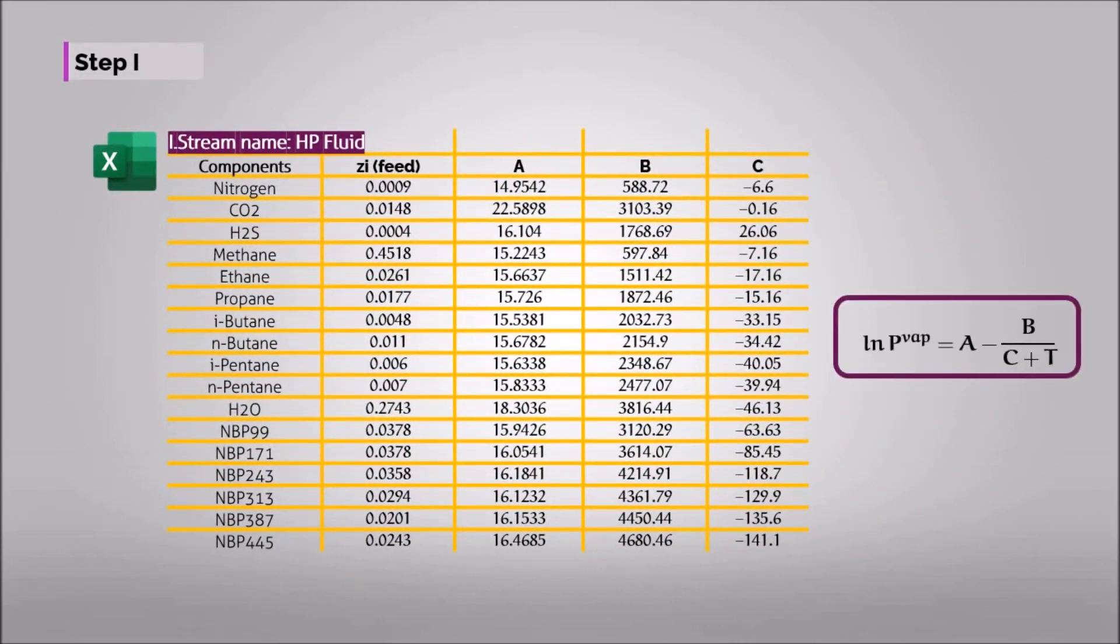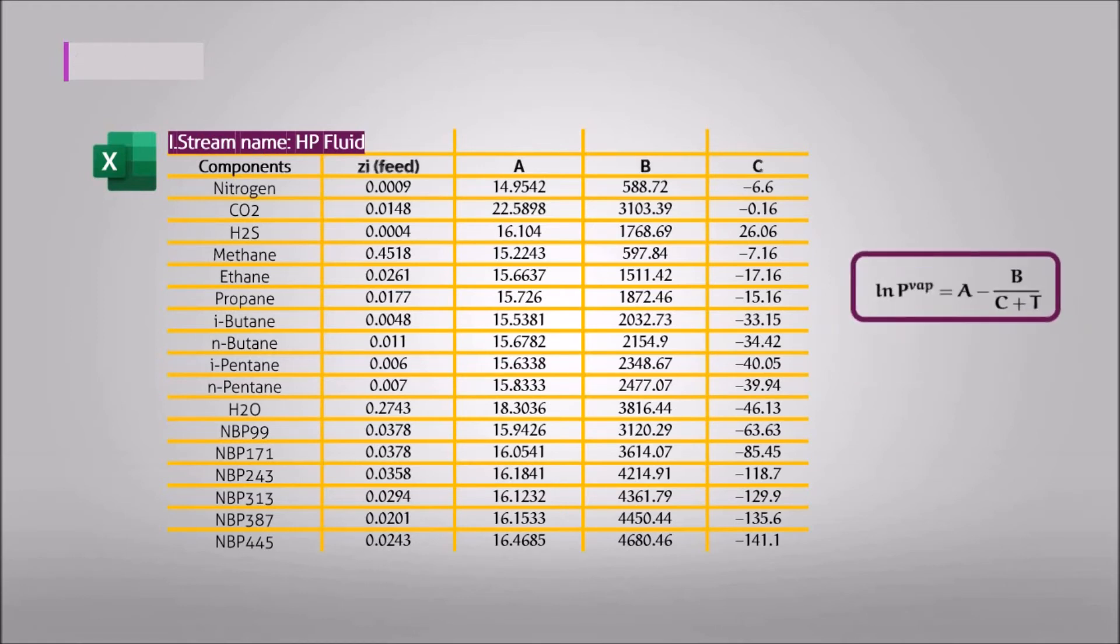The first step in flash calculation is the calculation of vapor pressure for each component. This can be done using the given formula, where natural logarithm of the vapor pressure for an individual component equals to a minus b over c plus the temperature of the stream that is flashed. Using this equation and a, b, and c constants, the vapor pressure of each component can be determined.